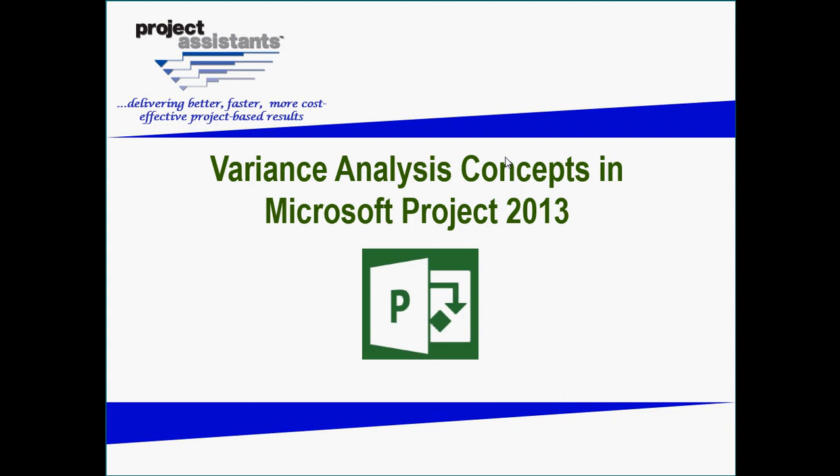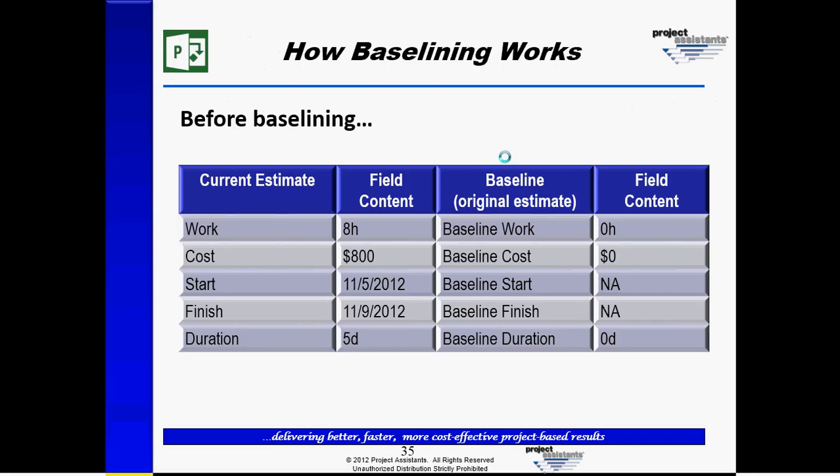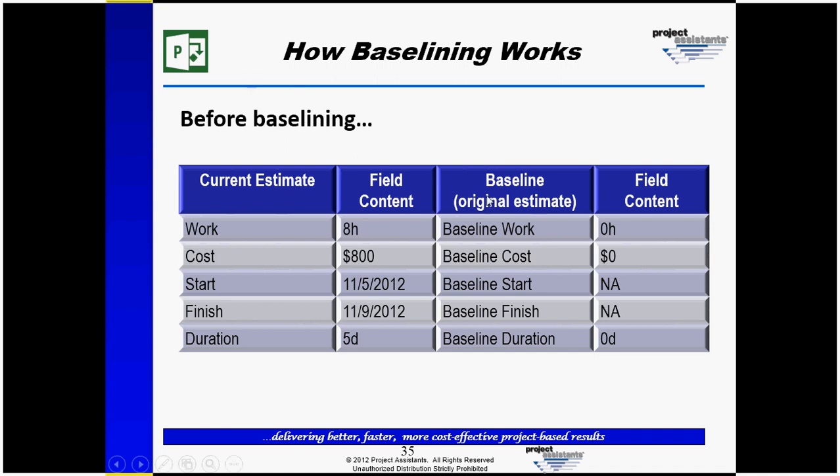Welcome to Project Assistance's 4-part series on Variance Analysis Concepts in Microsoft Project 2013. As you may recall, in our information about how baselining works in Microsoft Project 2013, we discussed the concept of the current estimate within a project plan versus the original estimate and the differences between what happens when we baseline a plan from the current estimate to the baseline estimate.